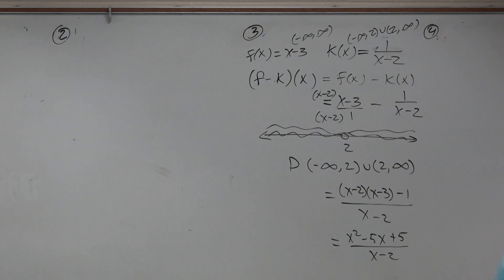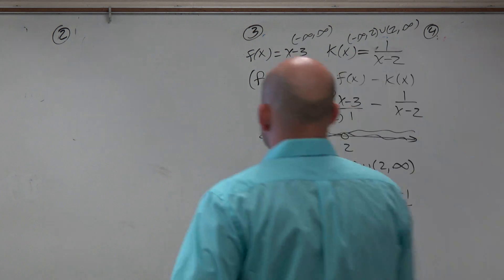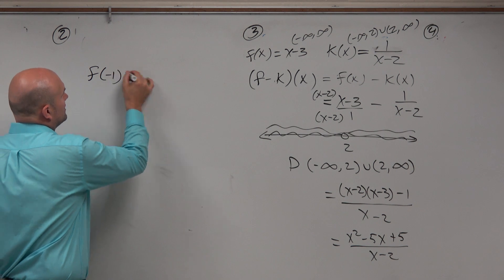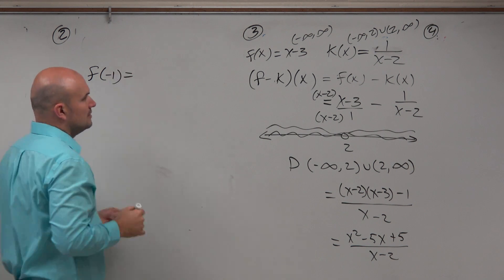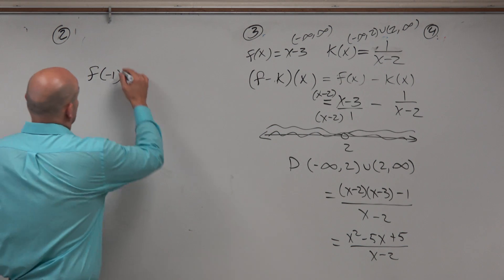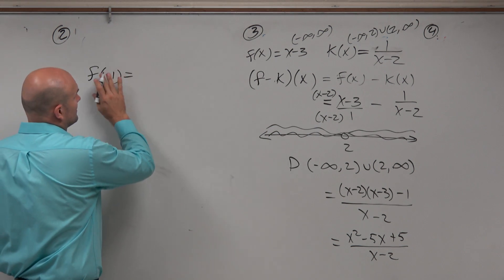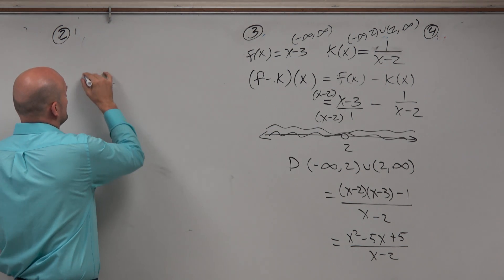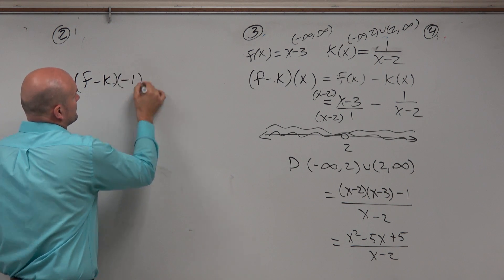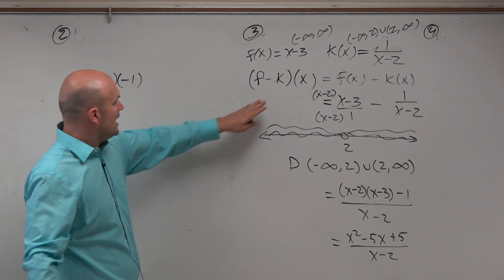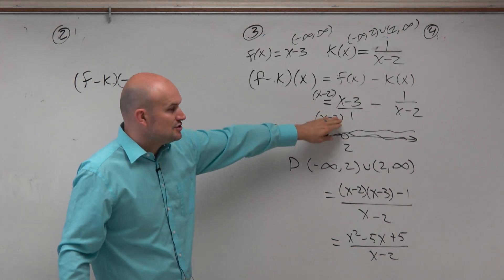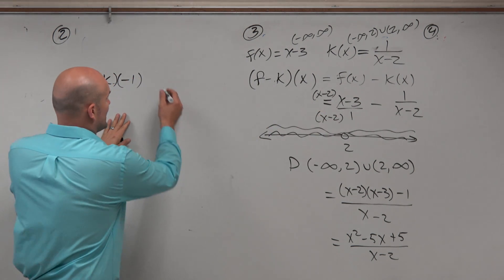Evaluate the function for negative 1. So if we figured out my function and I want to evaluate for negative 1, let's say I don't know how to simplify this. I need to simplify f minus k of negative 1. Well, I already know what f minus k of x is, so could I just plug in negative 1 here?